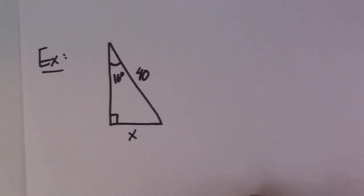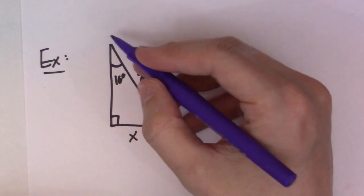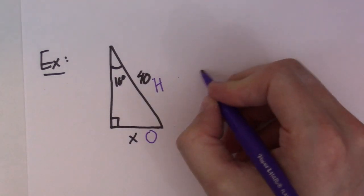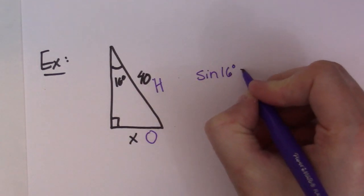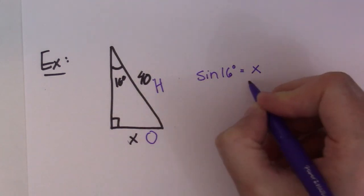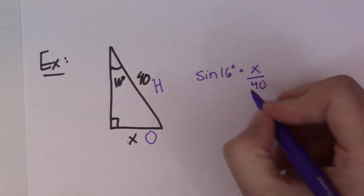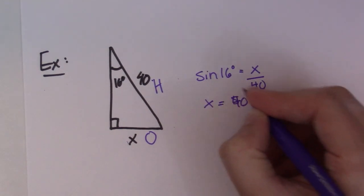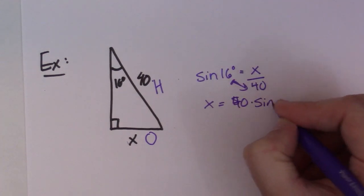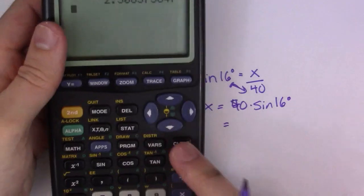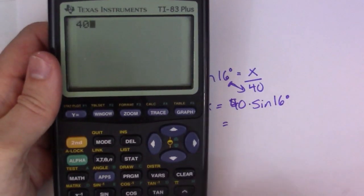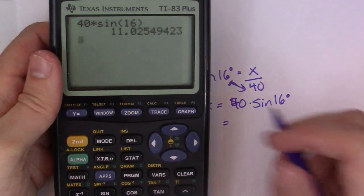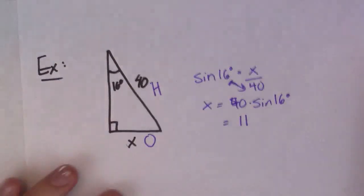Last example. This triangle is oriented a little differently — 16 degrees up here, hypotenuse of 40, and I'm looking for the opposite side. Sine 16 degrees equals opposite X over hypotenuse 40. So X equals 40 times sine 16 degrees. Entering 40 times sine 16 into the calculator gives 11 units.